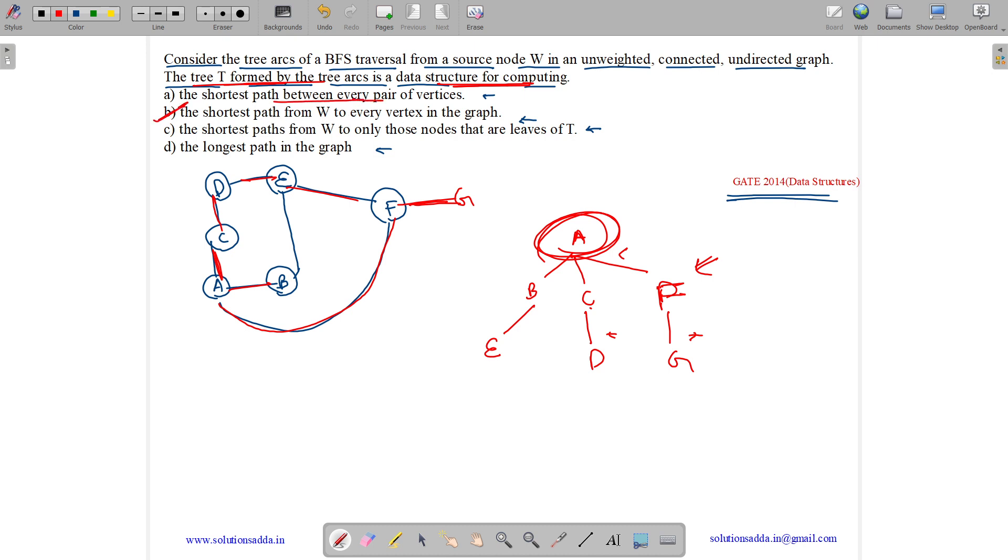It does not find the shortest path between every pair of vertices because it has only one source. So it finds the shortest path from W to every other vertex in the graph, and not only to the leaves because E is also a leaf and there are two paths of length 3 and length 2. But it finds the shortest path of length 2, and not the longest path for sure. So correct answer is option B.